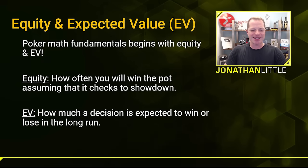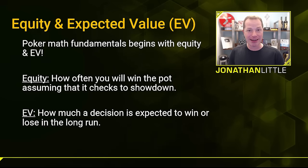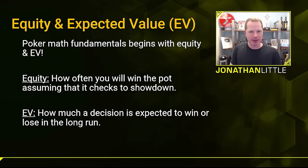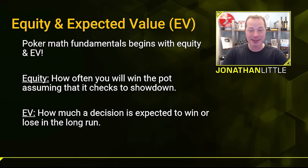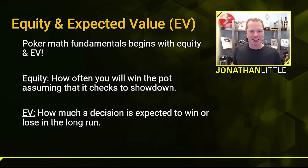First things first, let's discuss equity and expected value, or EV. You're going to find that all poker math begins with equity and EV. Your equity is how often you will win the pot, assuming it checks down to the showdown. Let's say you get it all in with ace-king against pocket twos — they're roughly 50-50. Ace-king wins a little bit less often. Ace-king has something like 47% equity; pocket twos has 53%. Your expected value, though, is how much a decision is expected to win or lose in the long run.